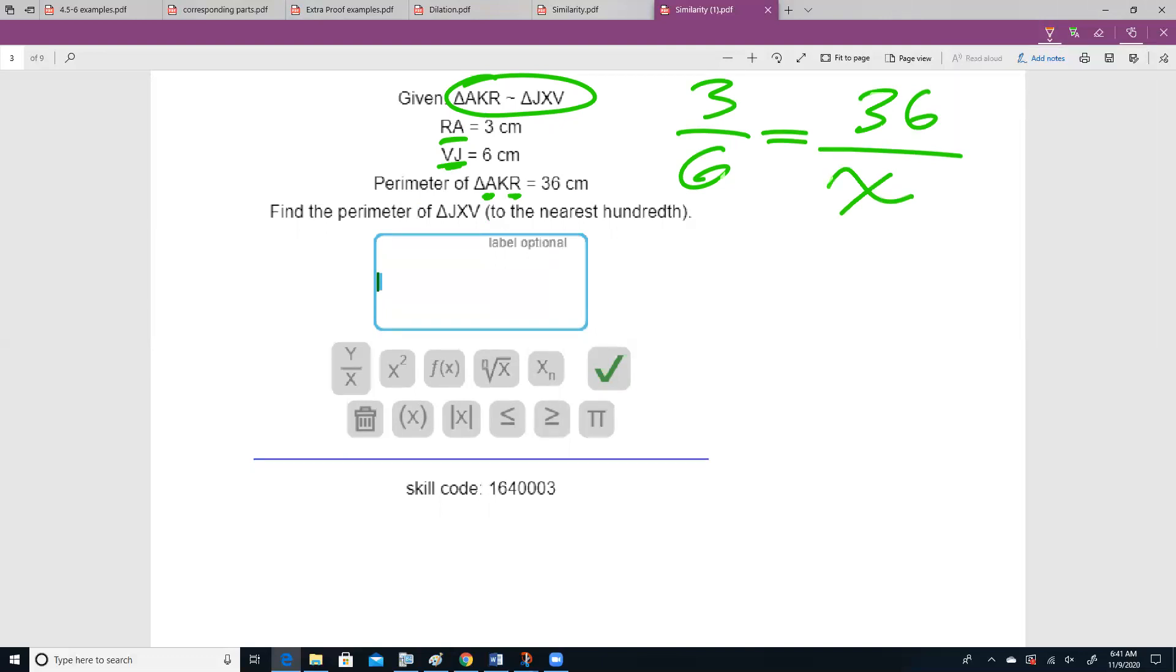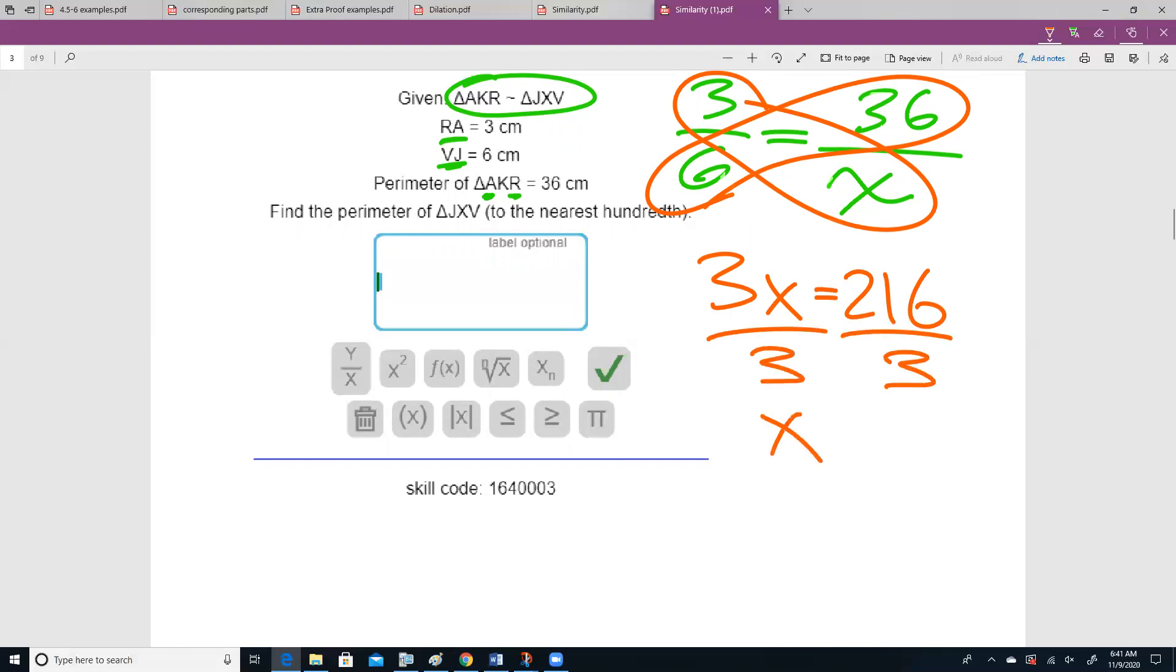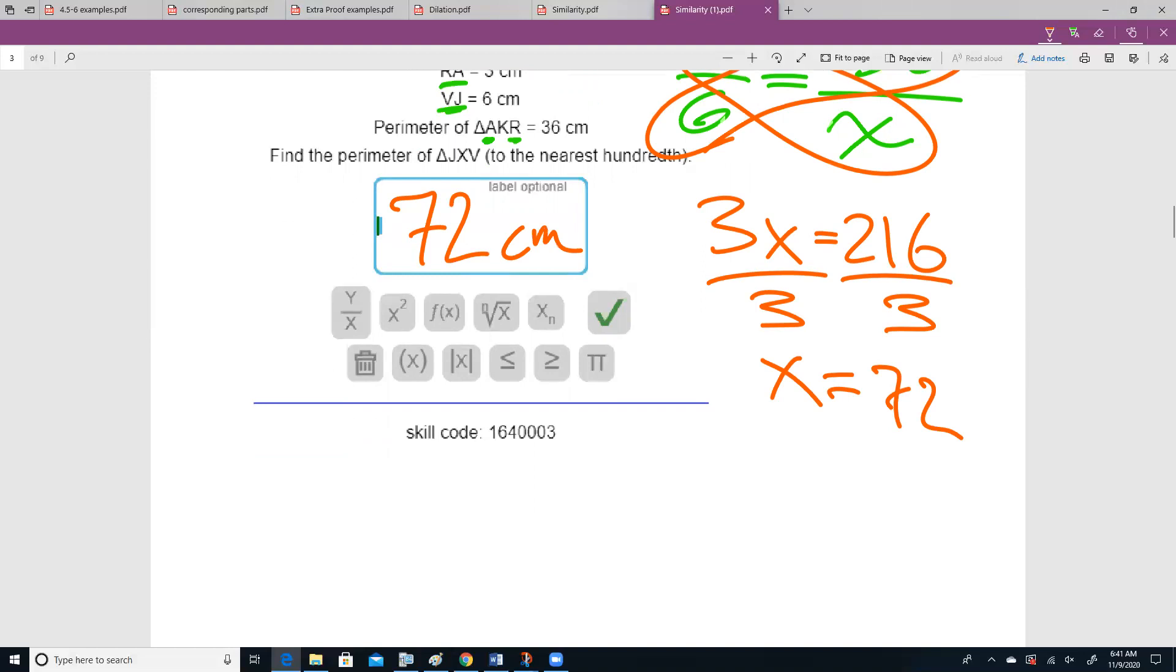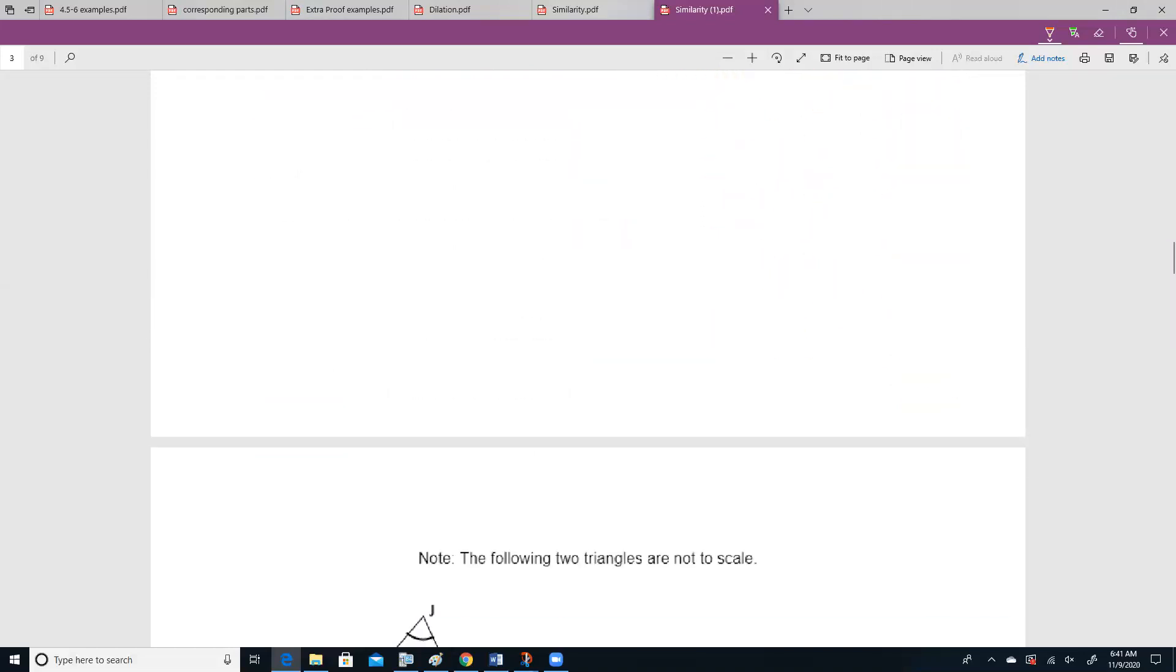We are going to multiply. 3 times x is 3x. 6 times 36 is 216. Divide each side by 3. x equals 72.